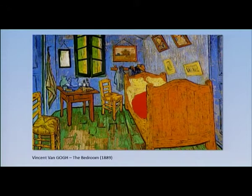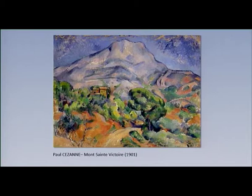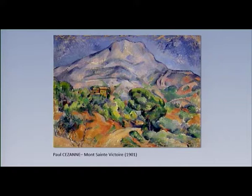Vincent van Gogh painted his room in a unique expressive style using heavy brushstrokes. We will see these types of brushstrokes during the period of Fauvism too. Paul Cézanne made different interpretations of the Mont-Saint-Victoire, which is found in France. A careful observation of this painting clearly indicates that his painting style is moving towards Cubism.